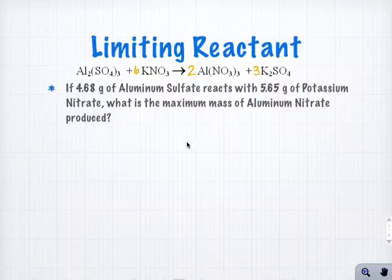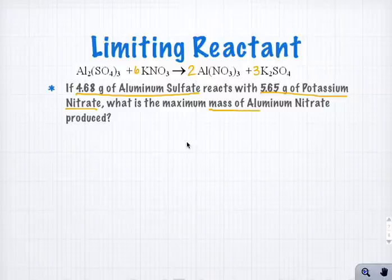So what happens if you have a limiting reactant question where you have an amount of each reactant, but instead of just being asked which one is the limiting reactant, you're actually specifically asked what mass of a product could you produce?